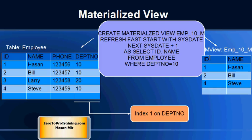So what is a materialized view in comparison with a view? If you create a materialized view, the database management system will actually store the resultant data in a table-like structure called a materialized view. It is not simply a window on the base table — it is actually a separate object holding data in itself, just like a table.